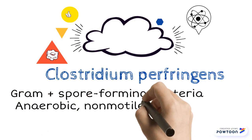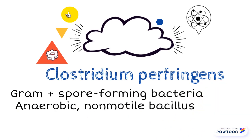Clostridium perfringens is a non-motile bacillus that prefers to grow in an anaerobic environment and is capable of forming spores when in an unfavorable environment.